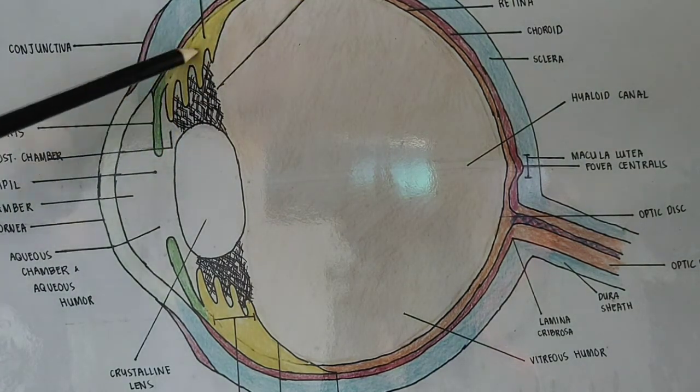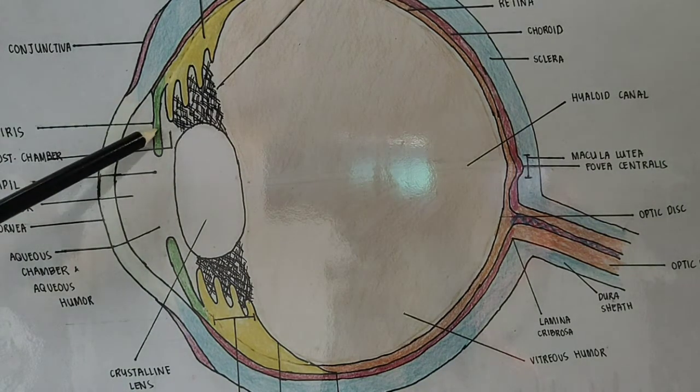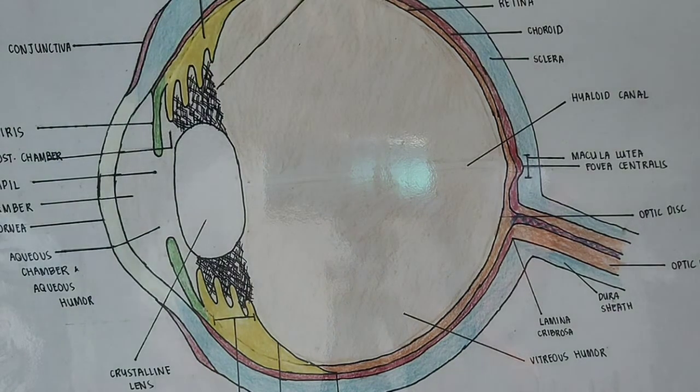The iris, ciliary body, and choroid are connected together. Together they are called the uveal tract. The uveal tract is the iris, the ciliary body, and the choroid.